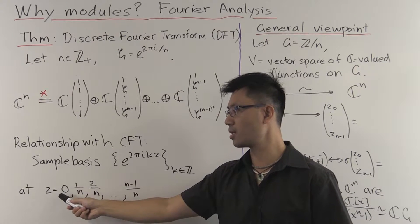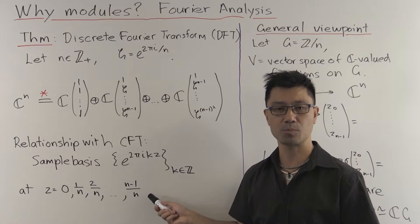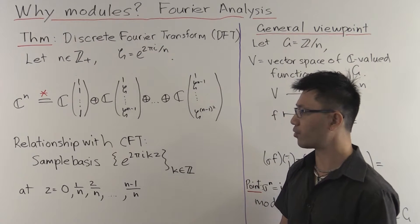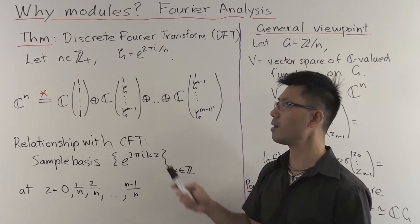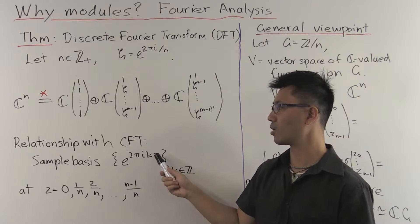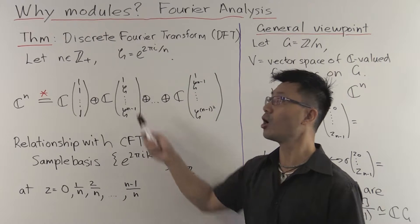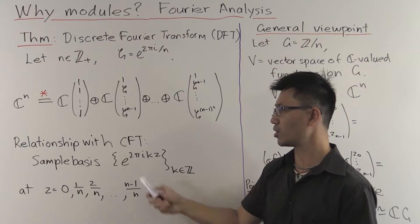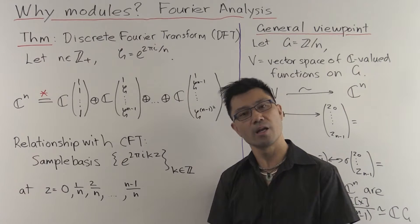So you can sample this at z equals 0, 1/n, 2/n, all the way up to (n-1)/n. And you'll find if you do that, for example, at k equals 0, you just get e^0 all the time, so you'll get 1s. But if you have k equals 1 and you sample here, you'll get these values instead. And you can continue this up to k equals n-1, and then they repeat themselves.